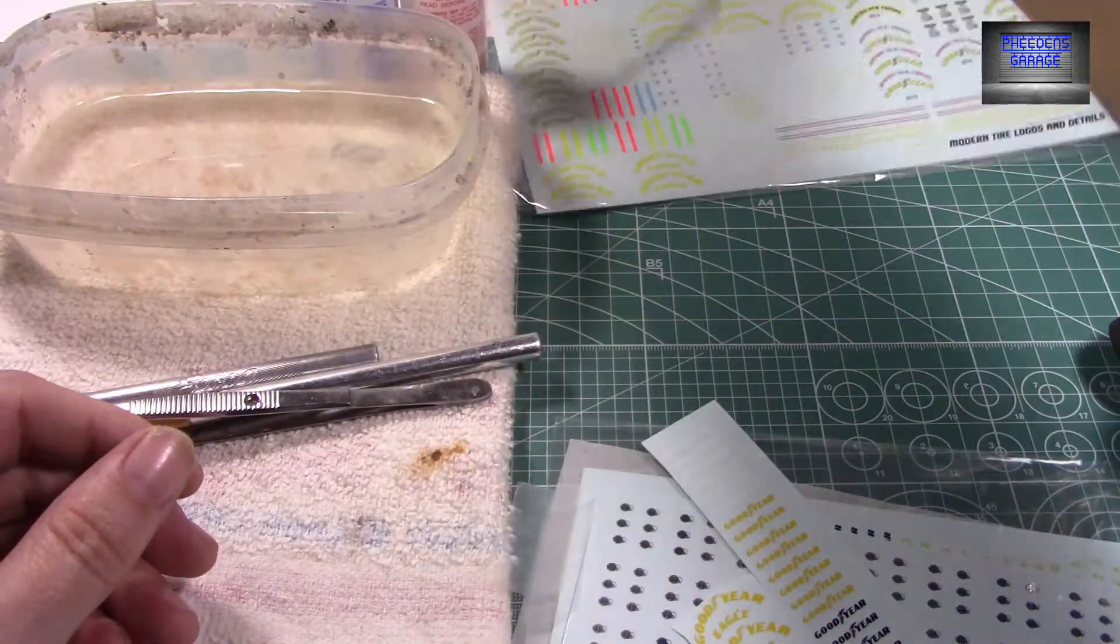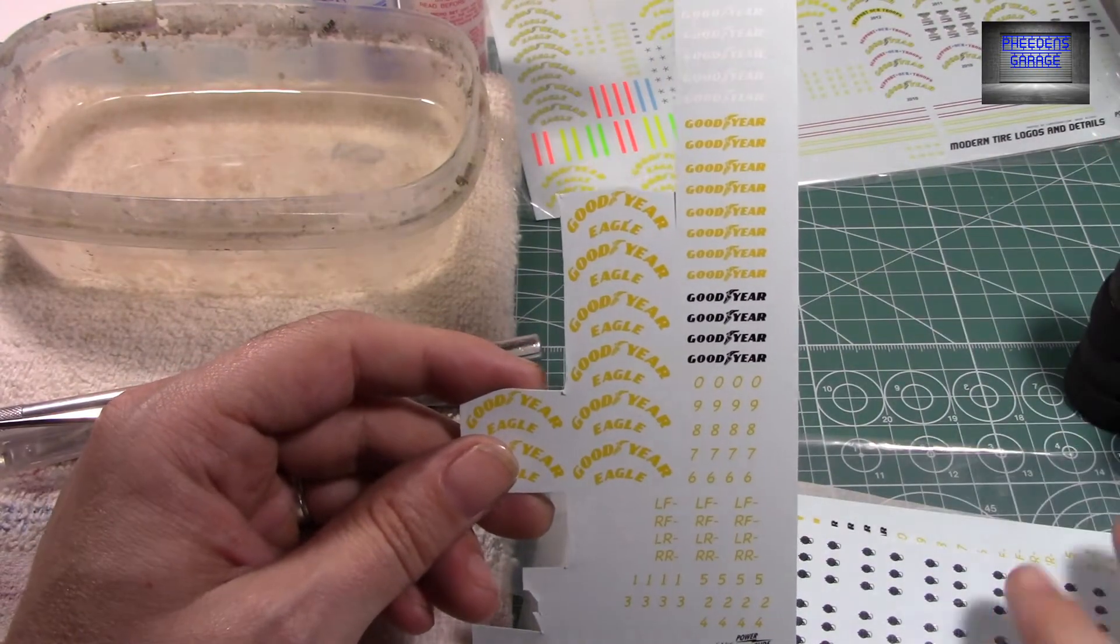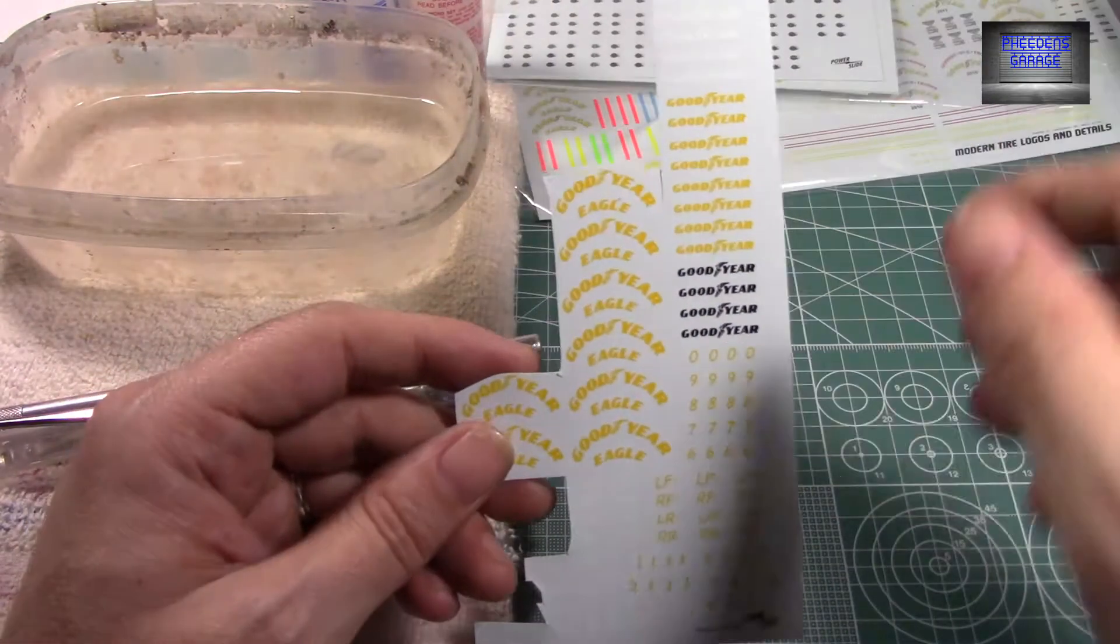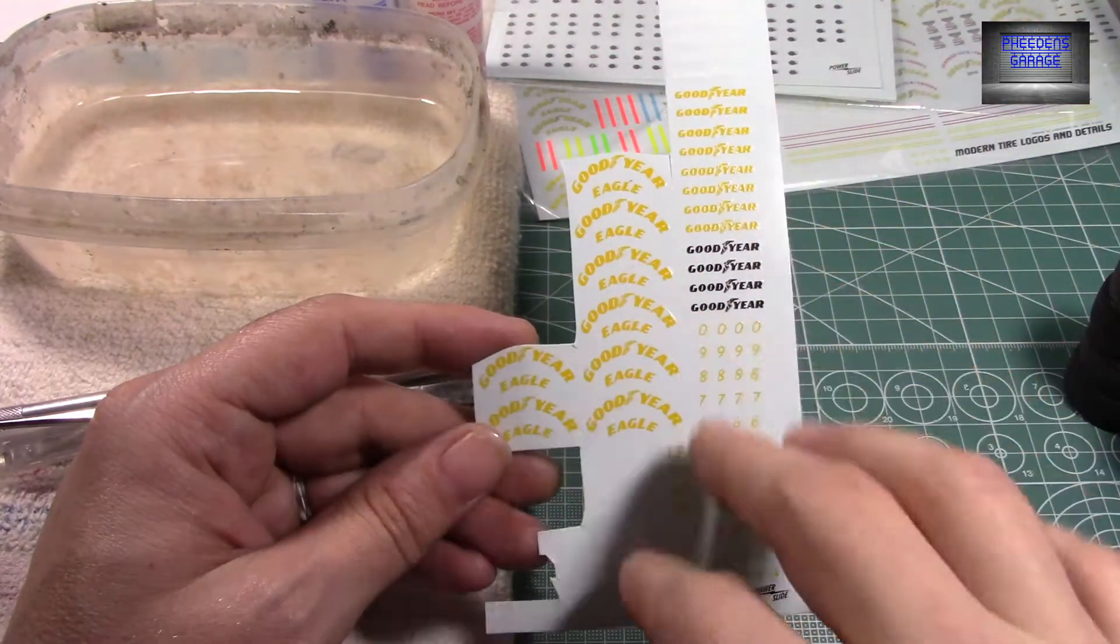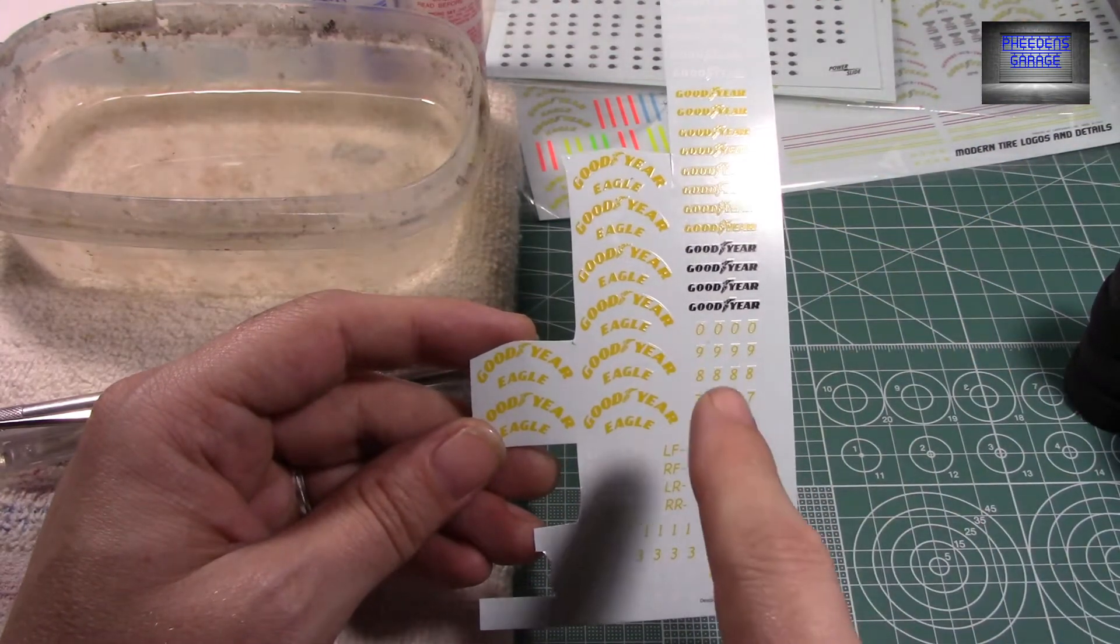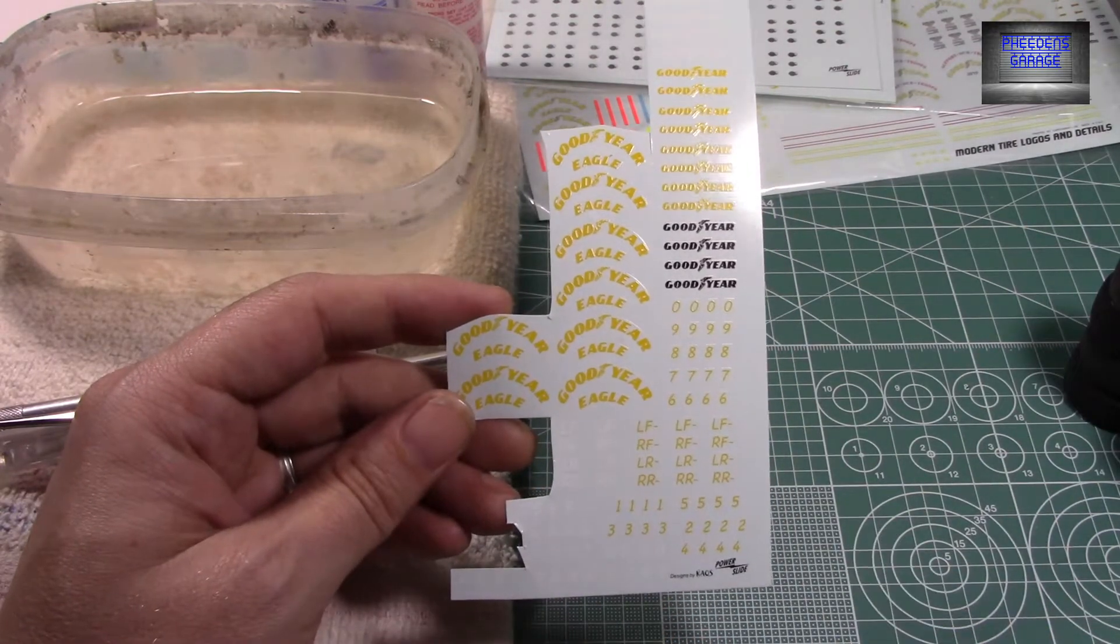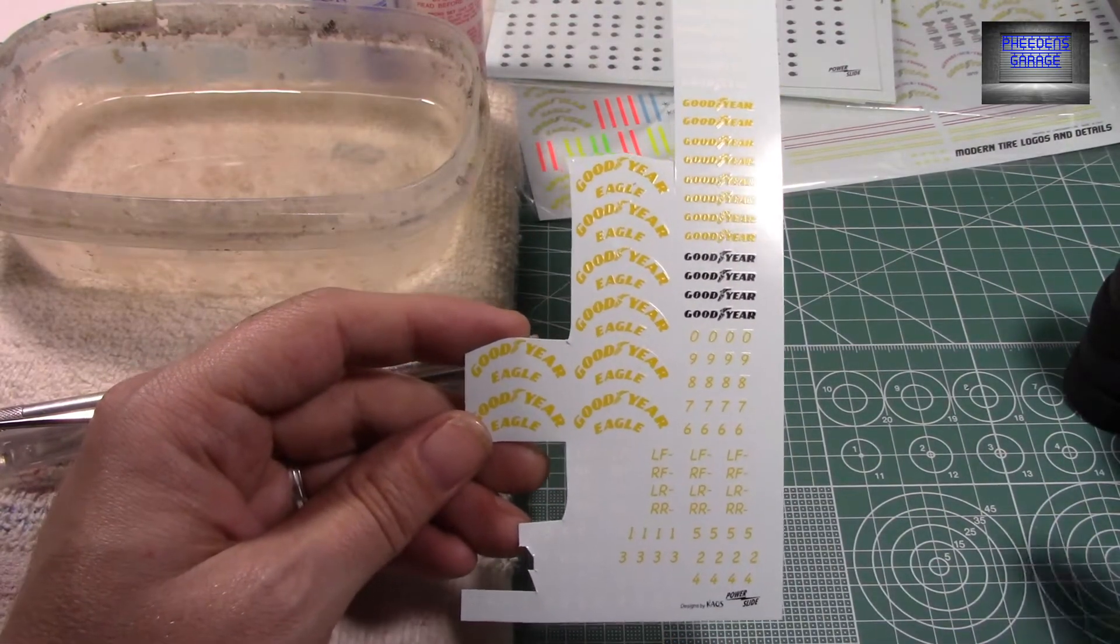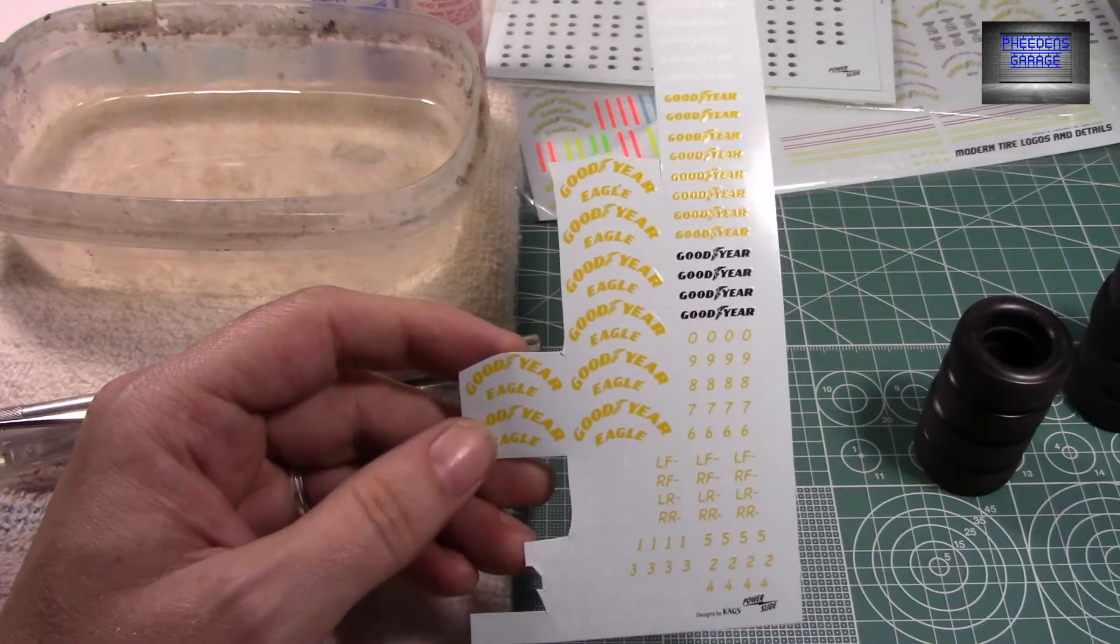Alright, so enough of that advertisement for Mike's decals. I'm going to be using this sheet today for the purpose of the video. I'm not going to be doing anything special. I'm just going to do the lettering and some generic ones on here. That'll be about it. So, let's get started.